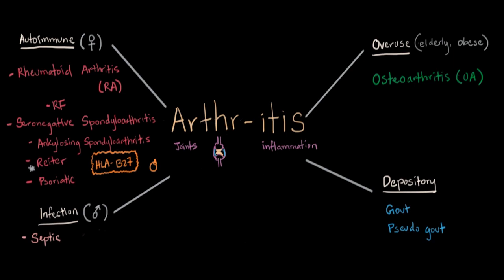So these four big categories — overuse, autoimmune, infectious, and depository — round out the big things we refer to as arthritis. All these diseases are so different, so the next time you hear 'arthritis,' remember it's not just the stereotypical knee pain. Pay attention to the symptoms that distinguish these different kinds of arthritis from each other.